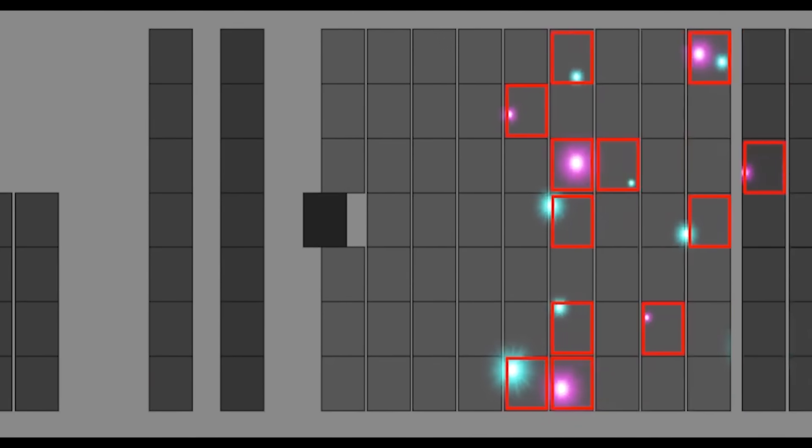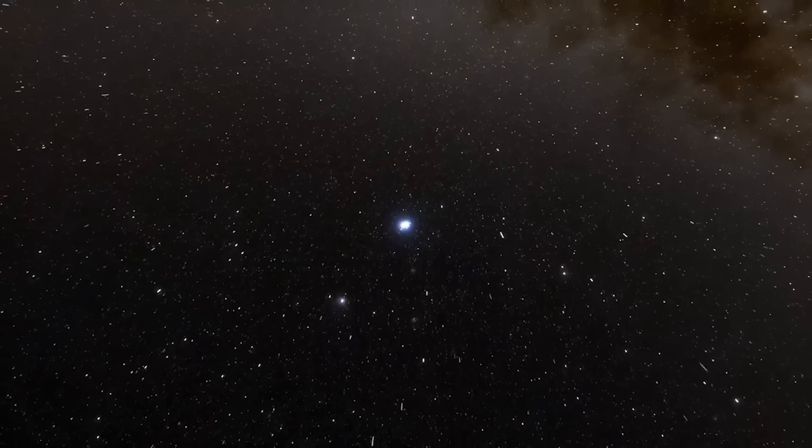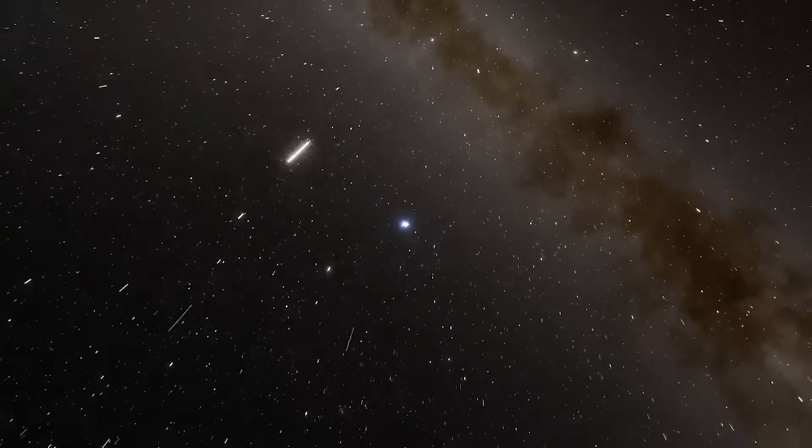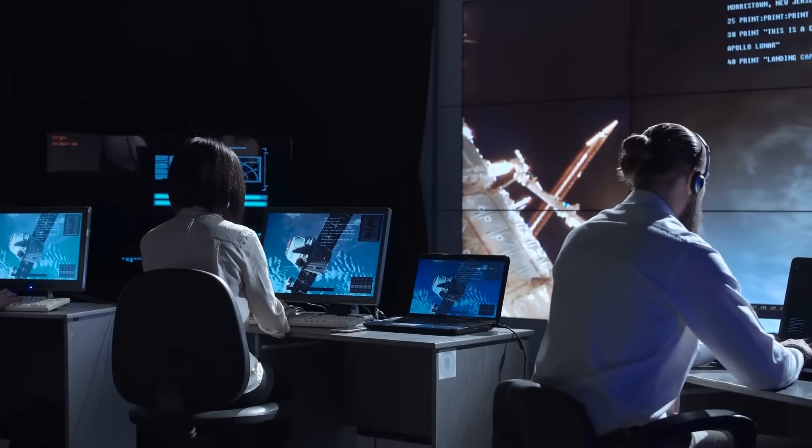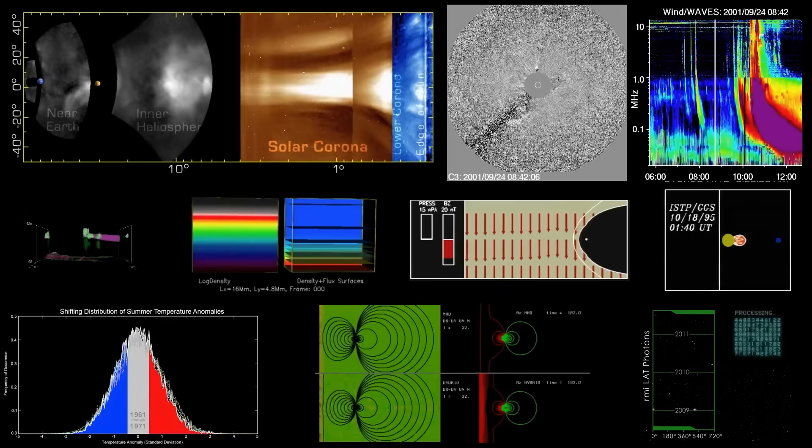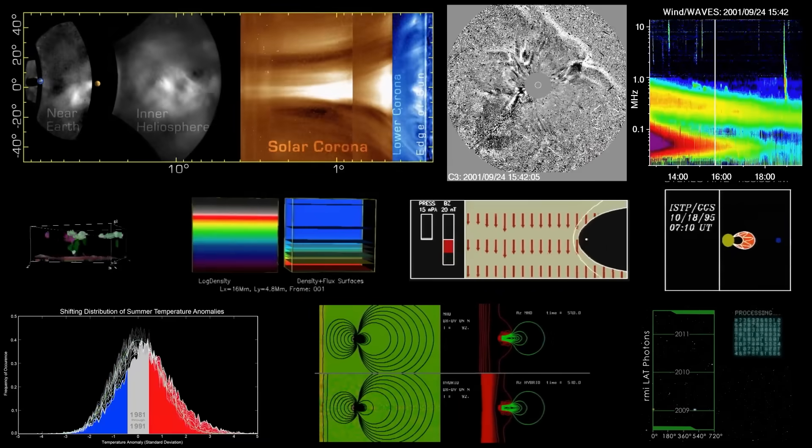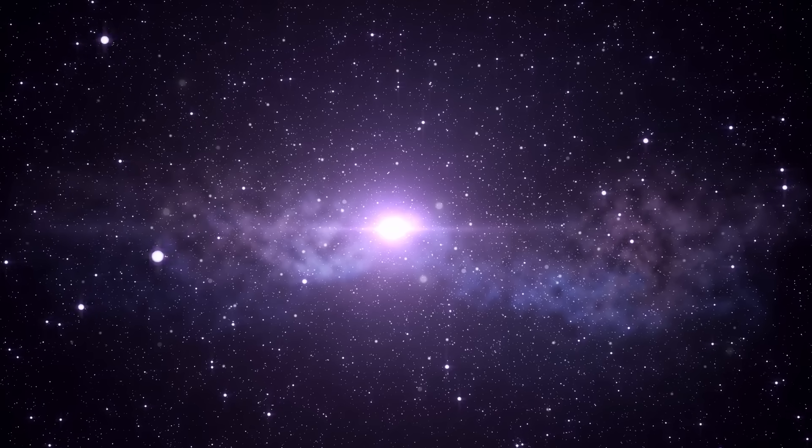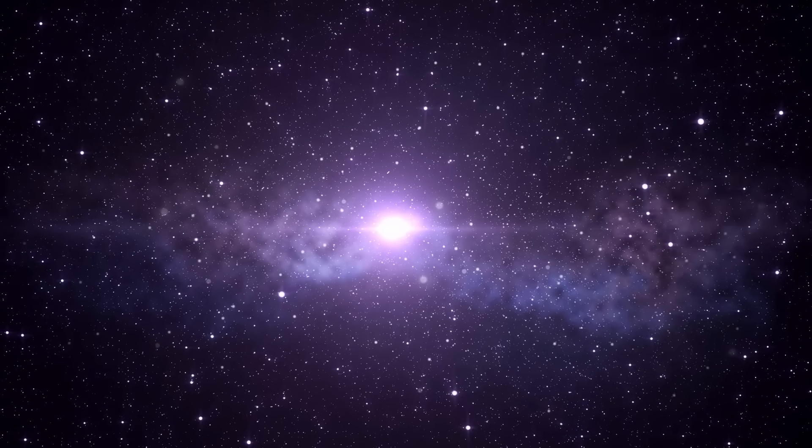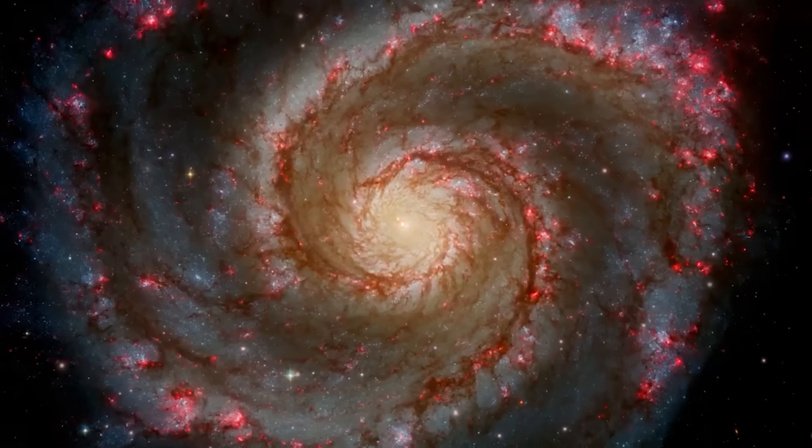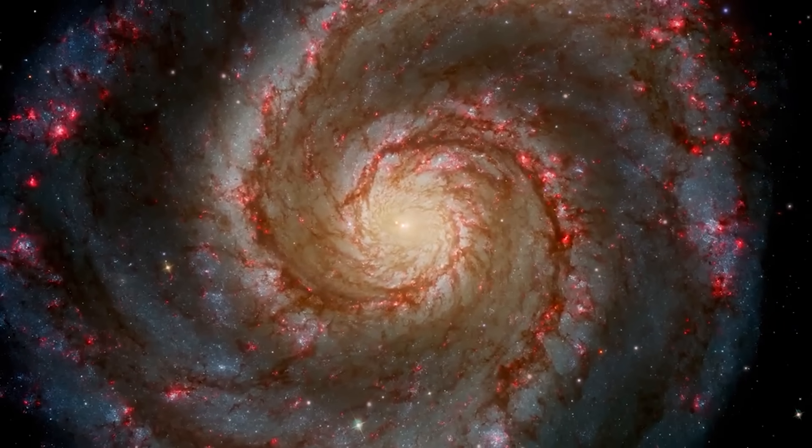Like detectives examining a crime scene, astronomers scrutinized this stellar evidence. What force could cause such dramatic acceleration? The next step in their investigation involved sophisticated computer modeling. Astrophysicists created intricate simulations, testing various scenarios to explain the behavior of these stellar speedsters. They modeled different gravitational influences, adjusting the mass and position of potential cosmic objects until they found a match for the observed motions.